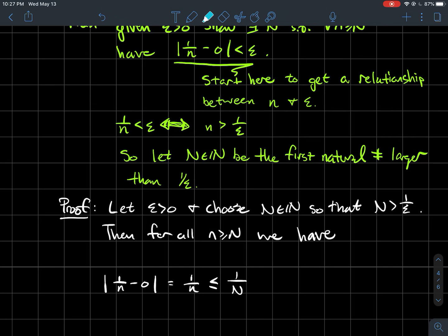Since n is bigger than N, this denominator is larger, so the reciprocal 1/N is larger. The denominator on the right has a smaller denominator, so it's a bigger fraction. By hypothesis, if N > 1/epsilon, then 1/N < epsilon, and that's what I'm going for.